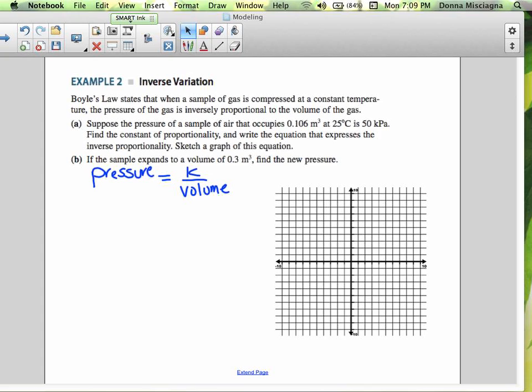And this is an example of inverse variation. Suppose the pressure of the sample of air that occupies 0.106 meters cubed at 25 degrees Celsius is 50 kPa. So that's just the units. That's just a unit for the pressure. So notice this is a measure of volume. Cubic measure is volume. This here is temperature.